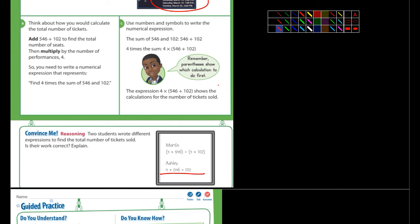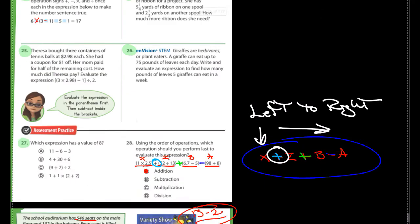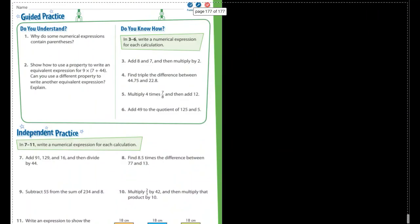Here's how one example they gave: they did 4 times 546 plus 4 times 102. Would that work? Yes, that one would work. My first thought was to write it this way: 4 times, and then in parentheses, 546 plus 102. Both of these examples work. So there's a couple different ways you can do these. And that's probably true for some of the problems we'll be doing here. But anyways, let's take a look at them.